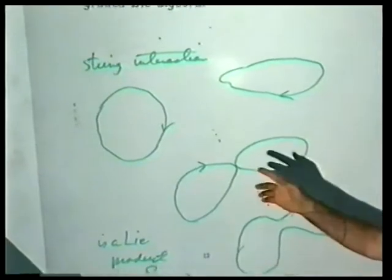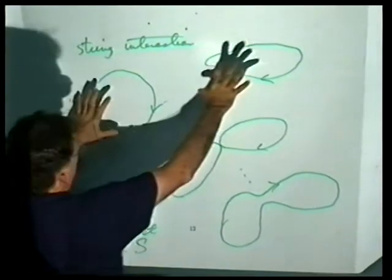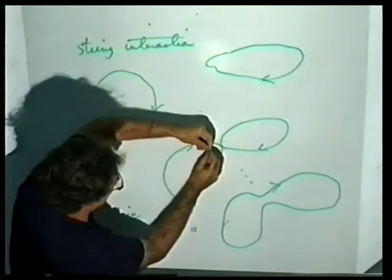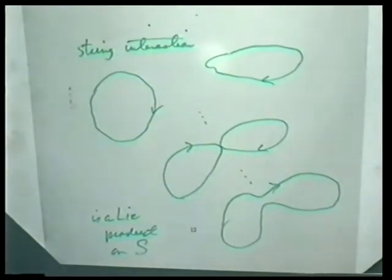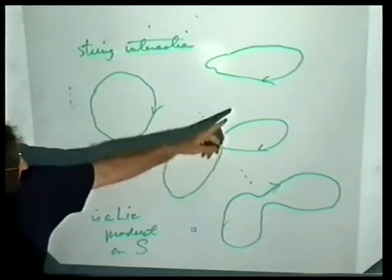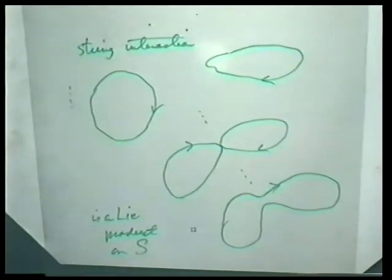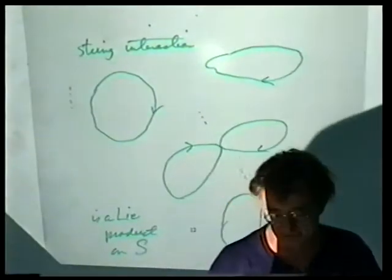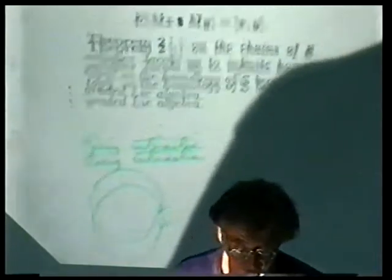If the manifold is even dimensional, the parity is what you expect. If the manifold is odd dimensional, you have to change the parity to make the homology into a graded Lie algebra. This gets back to the title — this is a mathematician-topologist's way of trying to say what the basic string interaction is: where you have two strings, they come together, they touch, and then they break apart and become one string. There's a paper of Witten where he discusses this interaction and observes that it's not associative — it satisfies Jacobi in this context.